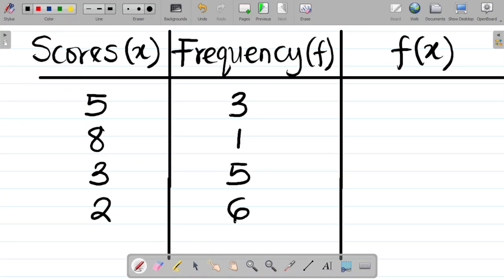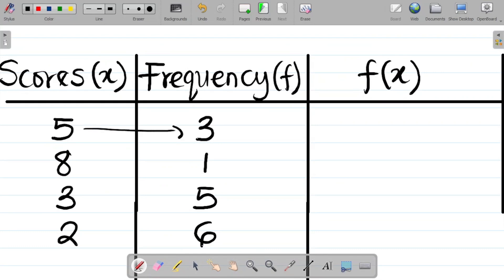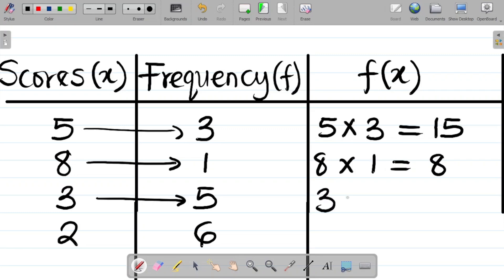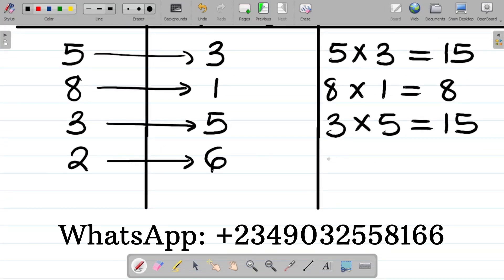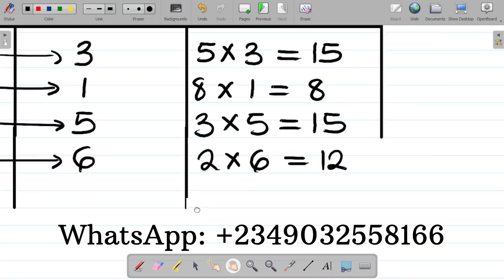So what's next here? Our next task would be to find the product. We'll find the product of the scores and the frequency. So for fx, fx simply means this times this, which is simply 5 times 3, and that's equal to 15. This is 8 times 1, and that's equal to 8. That's 3 times 5, and that's equal to 15. Finally for this we have 2 multiplying 6, that's 2 times 6, and that's equal to 12.